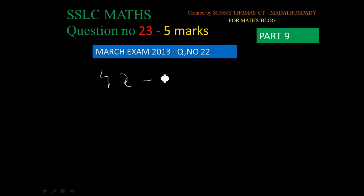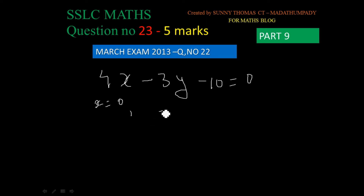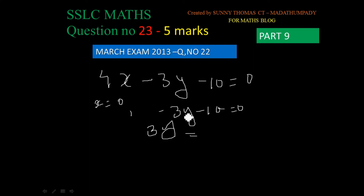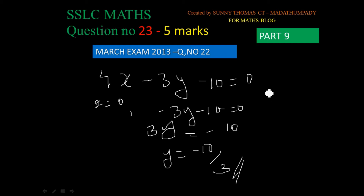The equation is 4x minus 3y minus 10. When x equals 0, we get minus 3y minus 10 equals 0. So 3y equals minus 10, therefore y equals minus 10 by 3. So we have the point 0, minus 10 by 3.